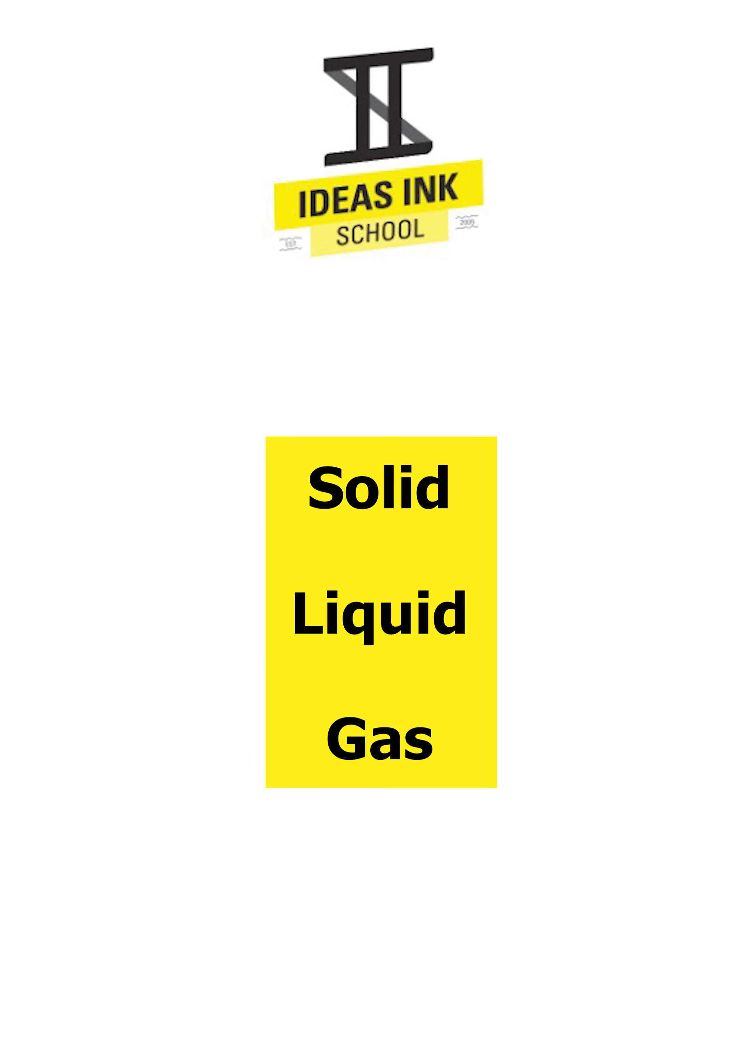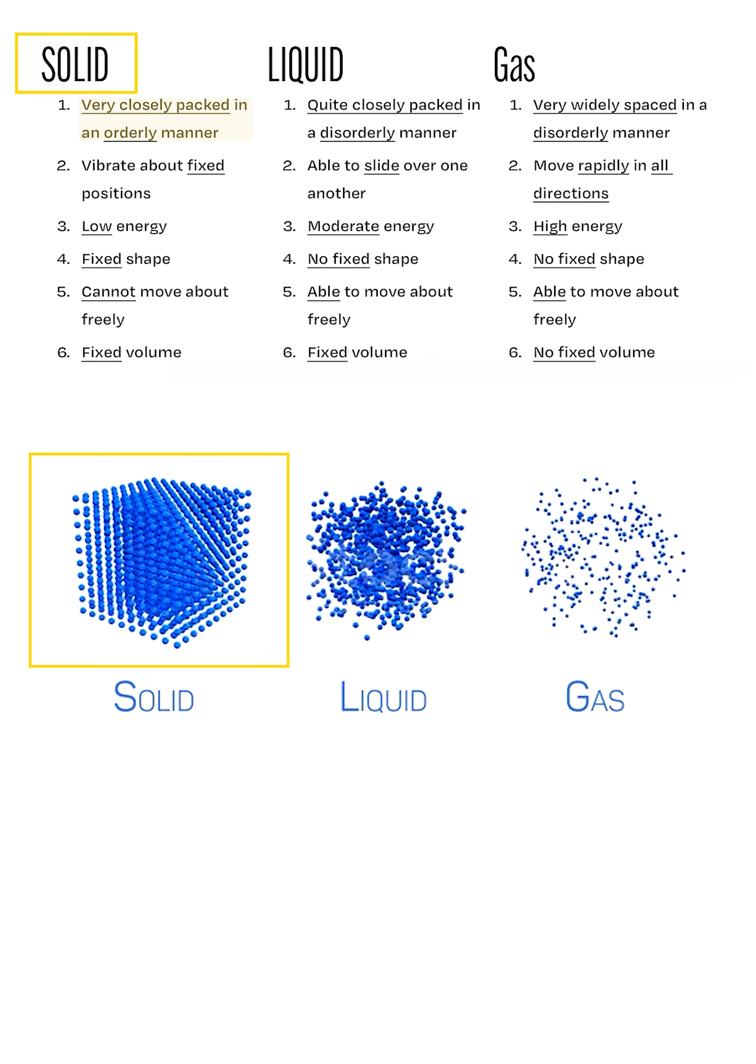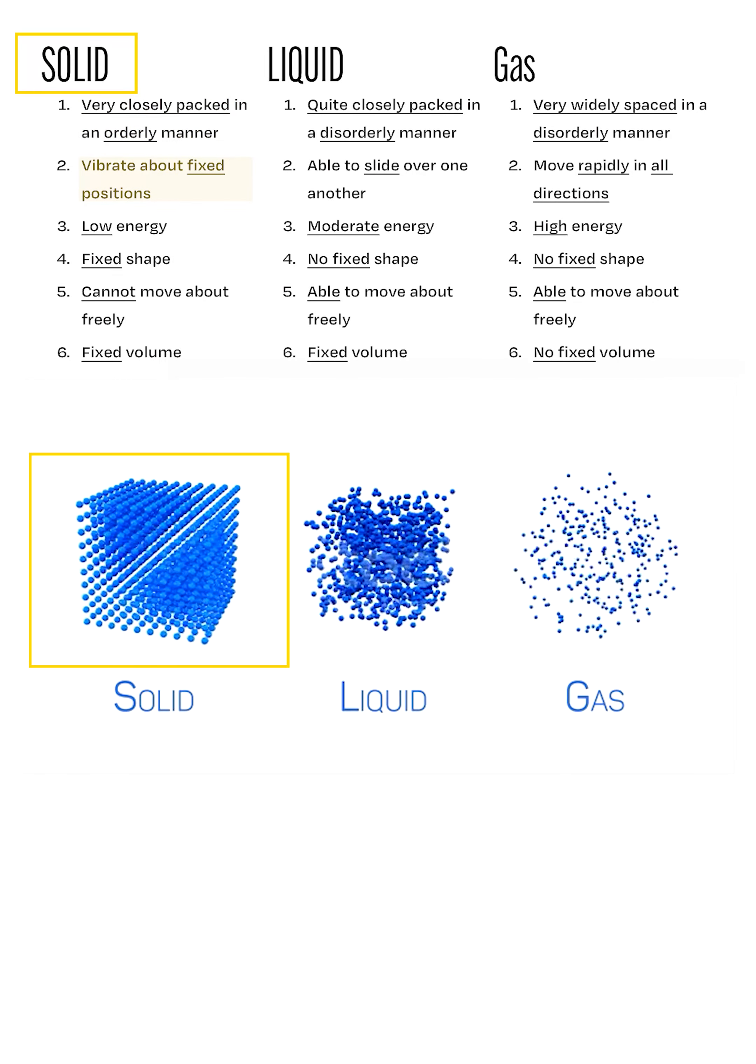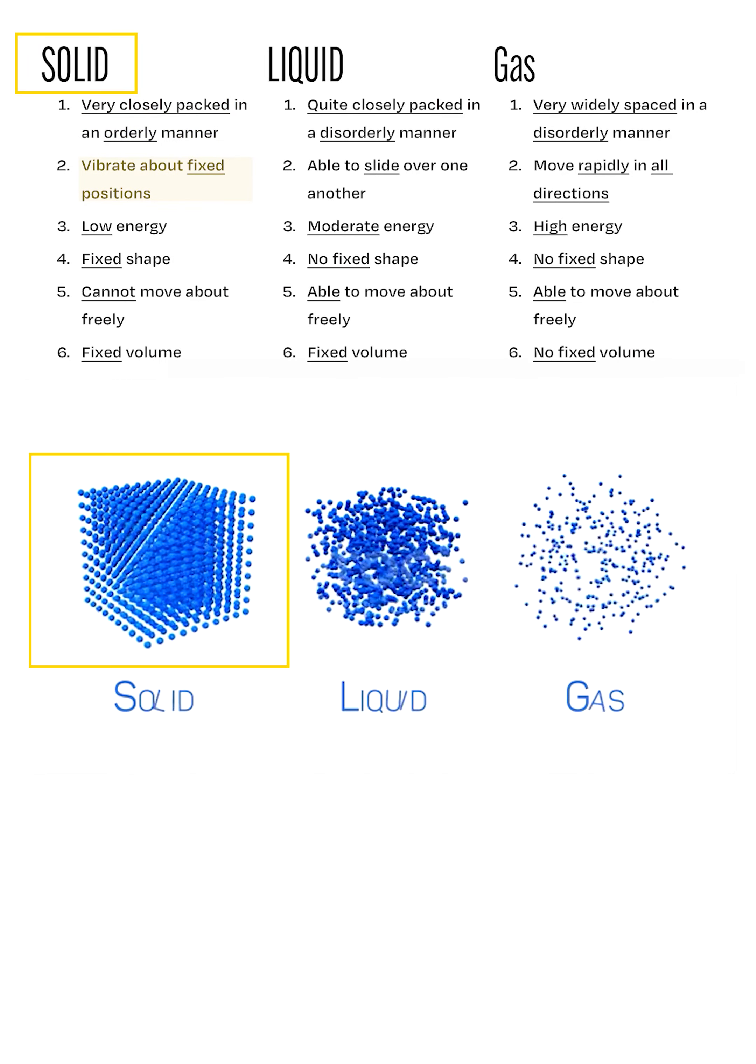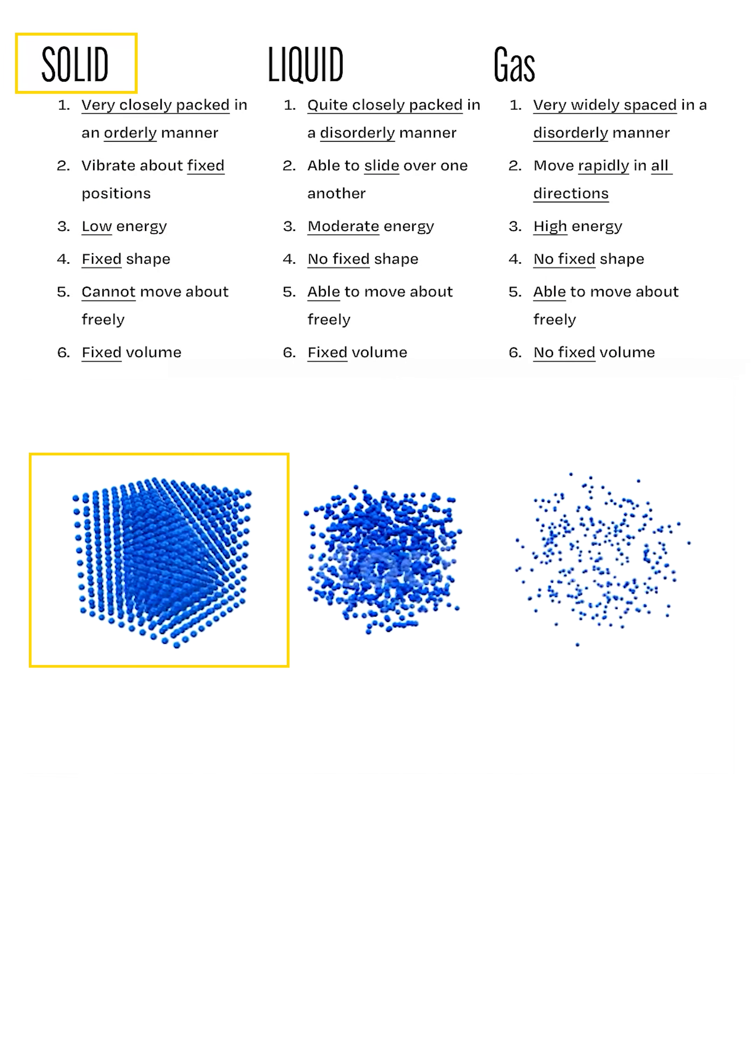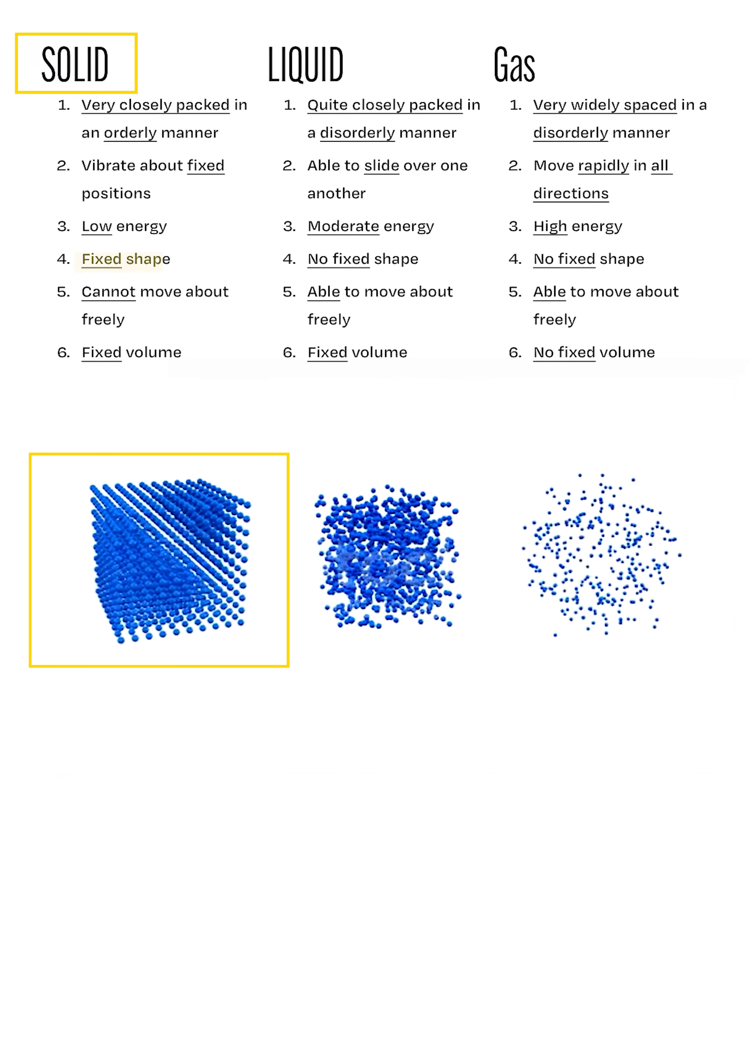In the next part of the chapter, we will be describing how particles behave as a solid, liquid or gas. As a solid, the particles are very closely packed and arranged in an orderly manner. These particles vibrate about their fixed positions and cannot move about freely. Particles in a solid also have low kinetic energy. Thus, because of these properties, solids have a fixed shape and volume.